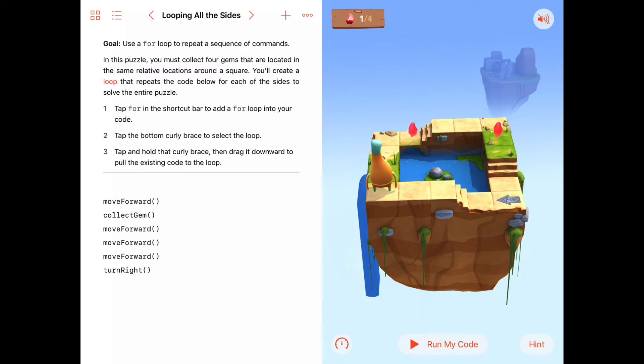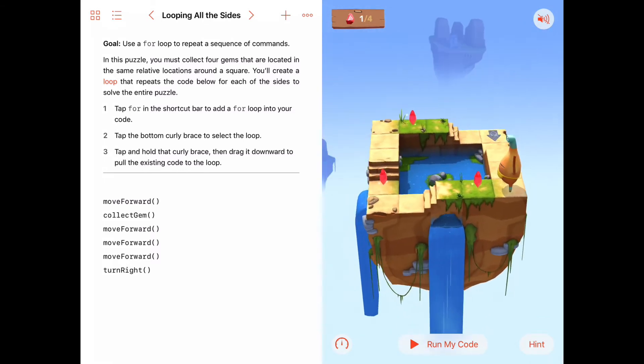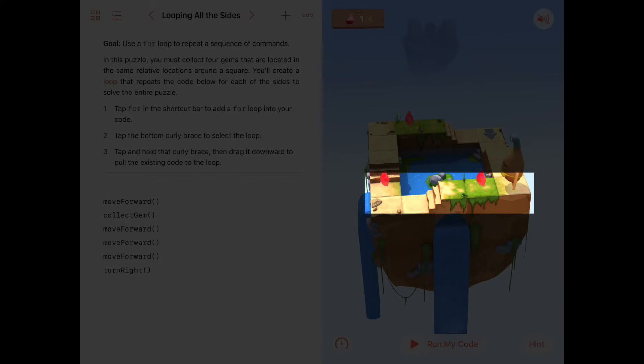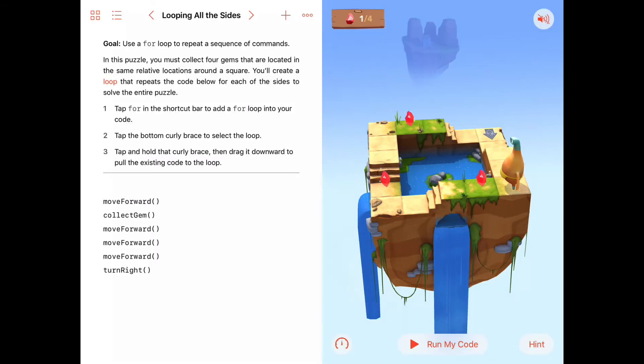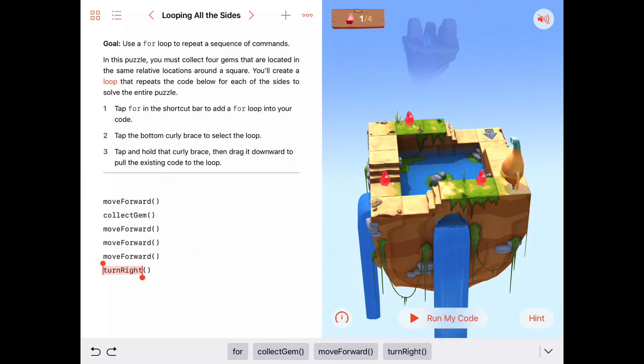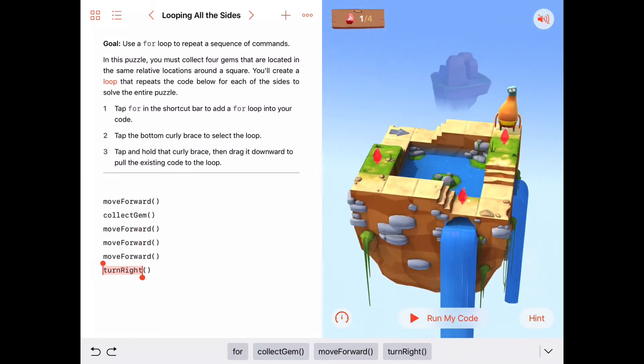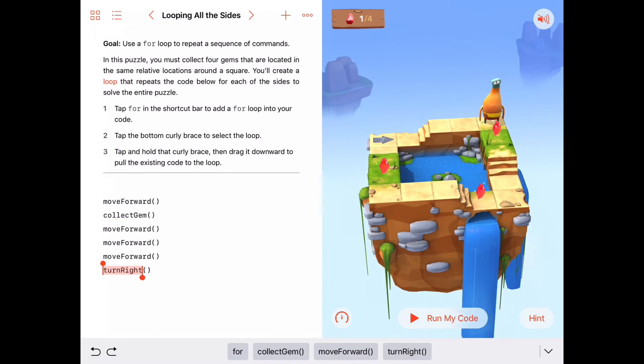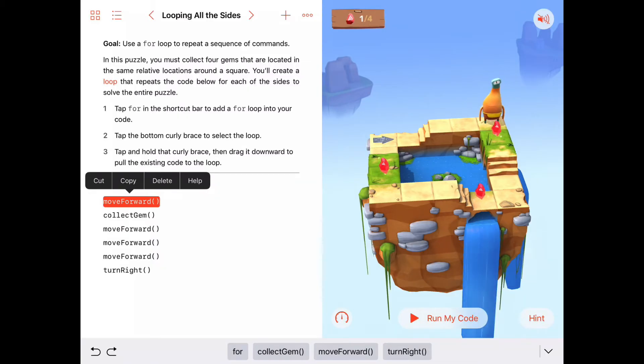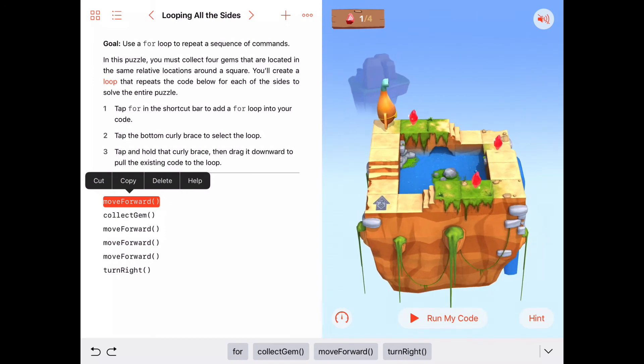Now there are still three more gems to go. And it looks like to get this gem, we need to move forward, collect gem, move forward, move forward, move forward, and then turn right again to get ready for the next row. So that's the same exact sequence of commands we have here. Okay, then let's look at the next. After we turn right, we're going to want to do a move forward, collect gem, move forward, move forward, move forward, and turn right again. Again, the same sequence of commands.